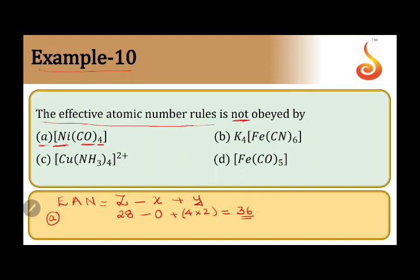36 is the atomic number of krypton, the nearest noble gas. Therefore, we can say that tetracarbonyl nickel zero obeys EAN rule.